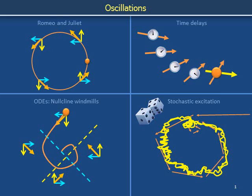In this video, we provide intuitive perspectives for understanding dynamical systems that exhibit oscillatory behavior. Romeo and Juliet will help us visualize oscillations as orbits in a plane. We will develop intuition regarding the types of trajectories we can get in terms of the angles at which nullclines pass through critical points in phase portraits. In the last half of the video, we will discuss how dynamical systems expected to produce spiral sinks can be modified through time delays or through stochastic excitation to support sustained oscillations.